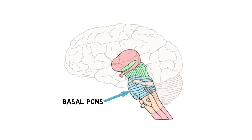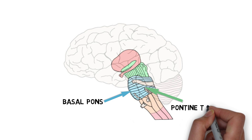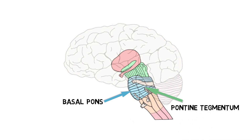The region behind the basal pons is called the pontine tegmentum or dorsal pons. The pons contains many tracts and nuclei; this video will highlight just some of the more notable of these.